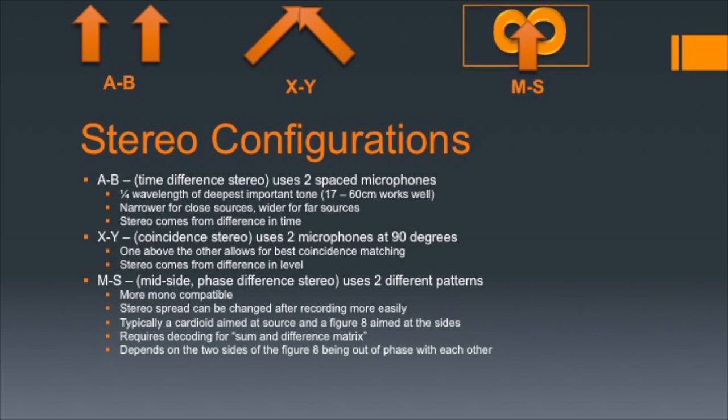MS is not as likely to be used in a community-access cable television production because of the cost and complexity of the equipment. However, there are advantages: it's easier to make a mono-compatible version of the audio because you have one microphone pointed straight ahead as the dominant sound in the mono channel. You can also adjust the breadth of the stereo field in post-production more easily by adjusting how the sum and difference matrix components work with each other.